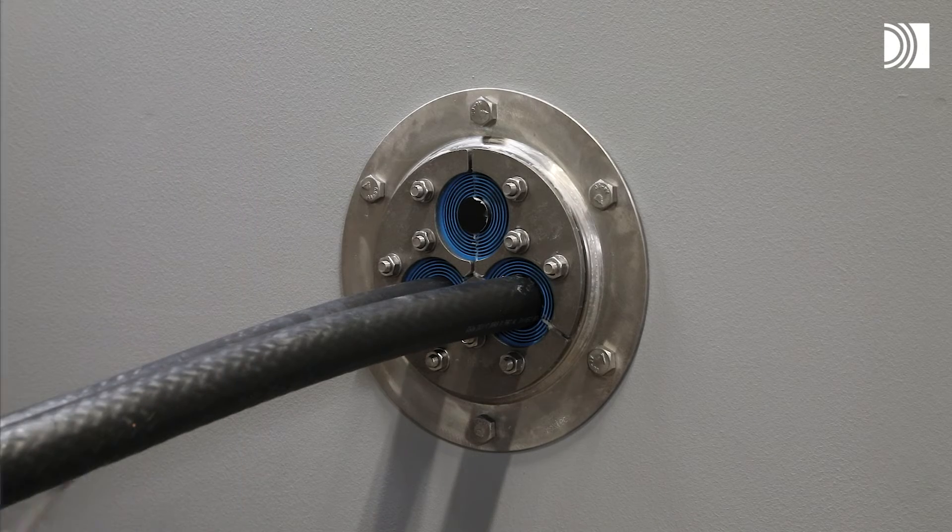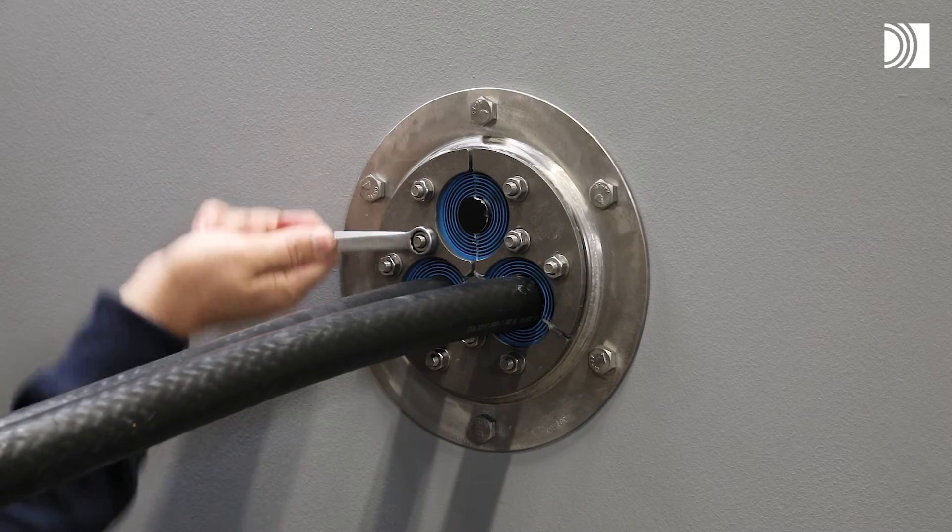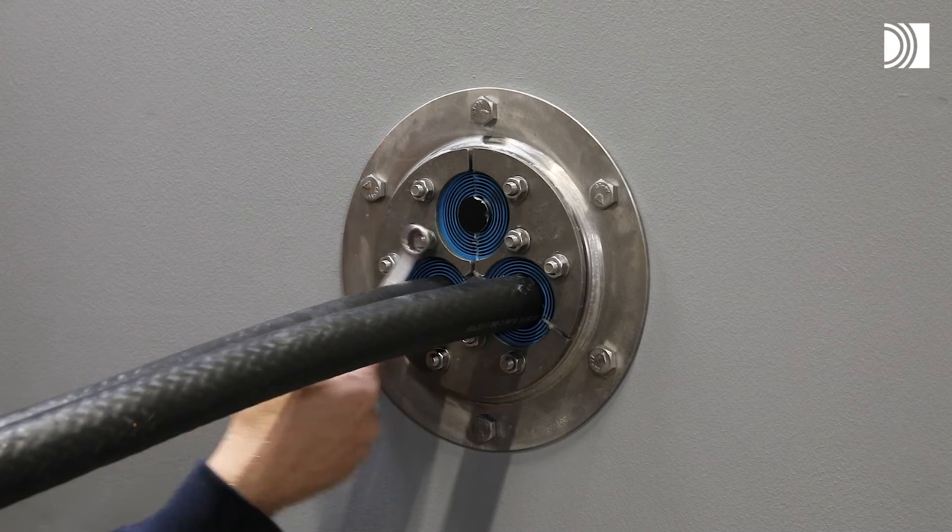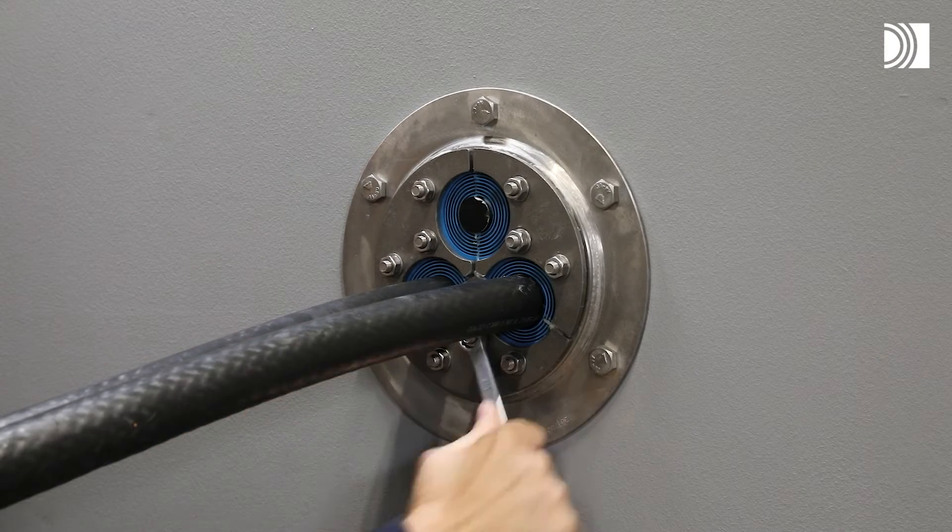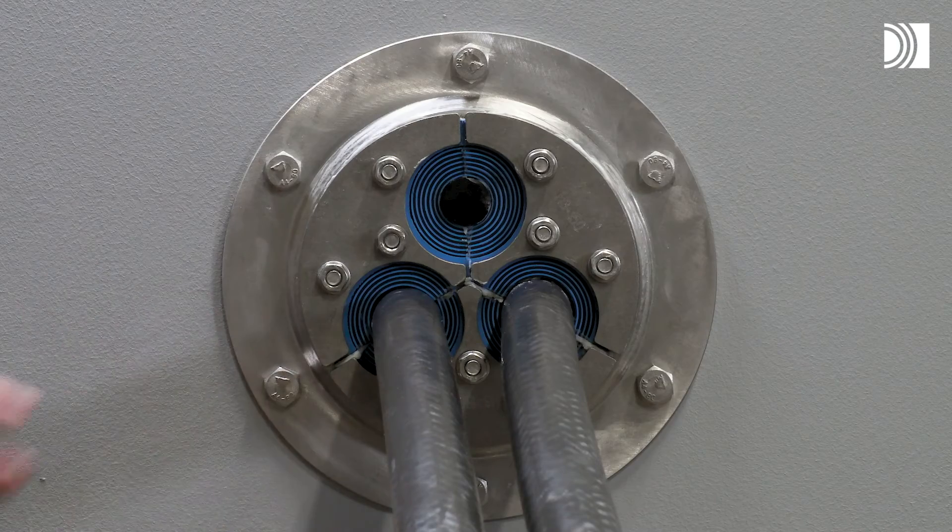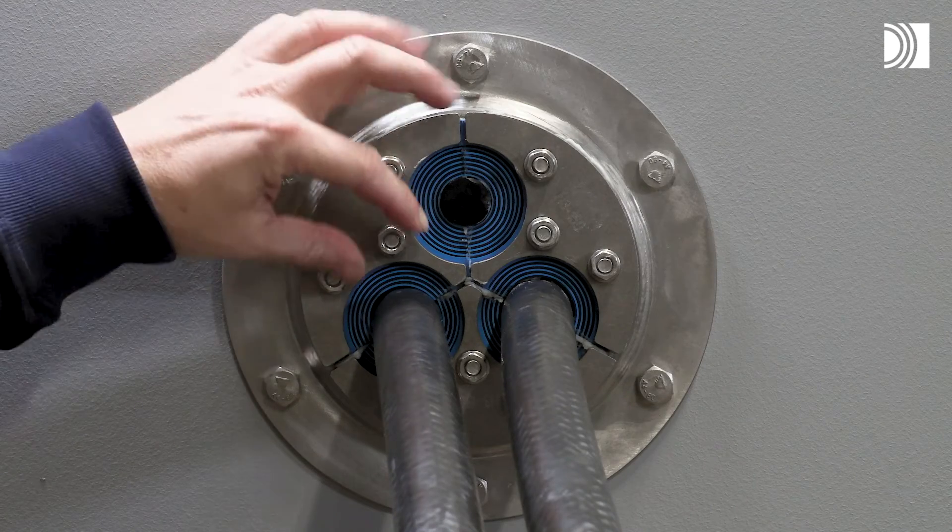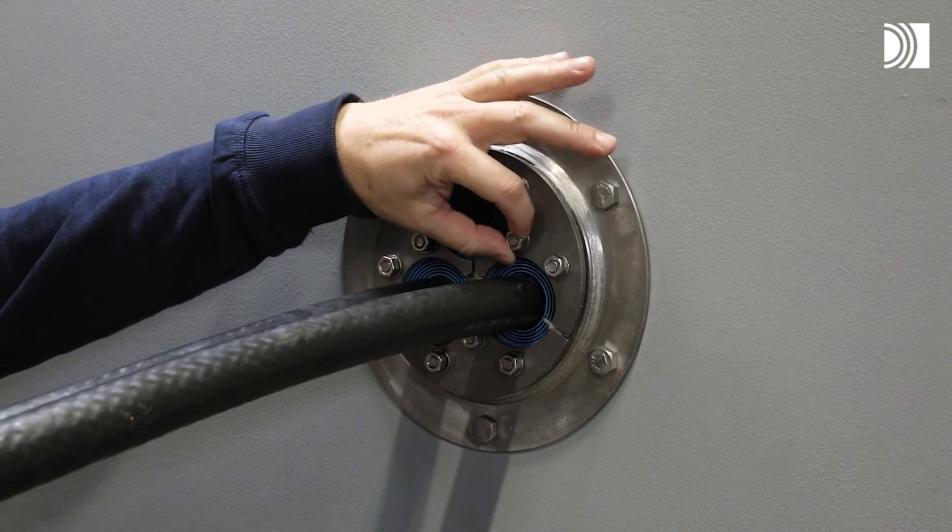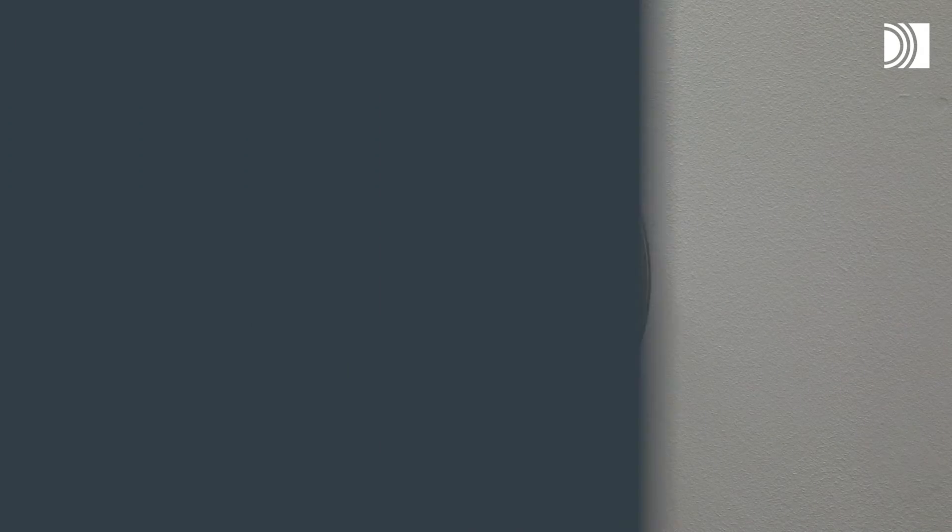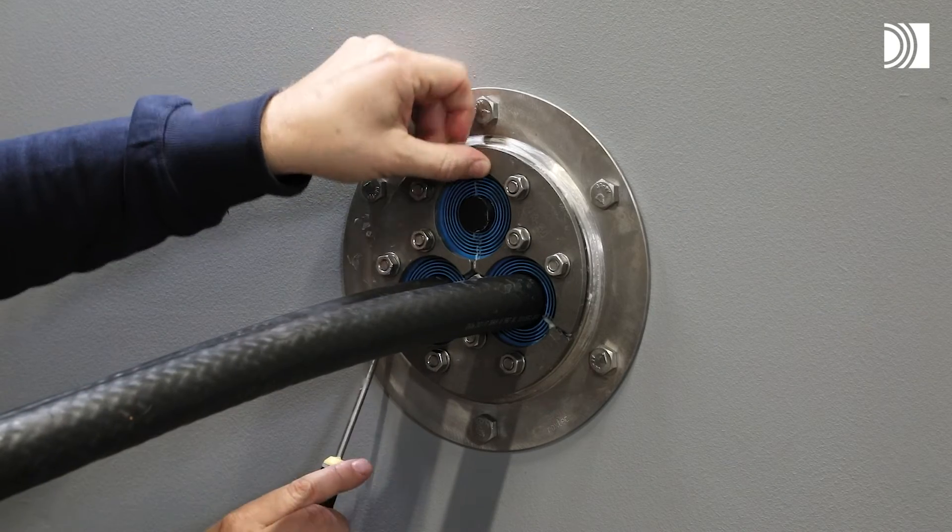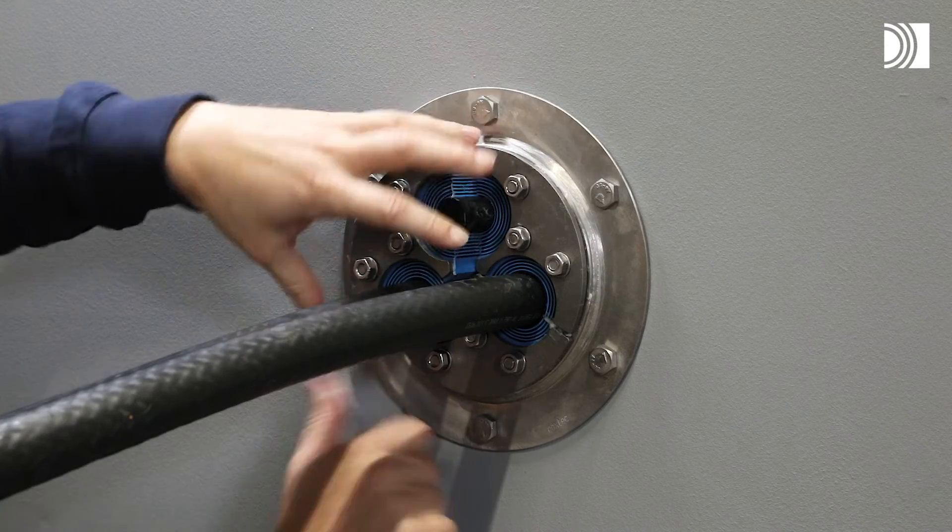Disassembly and reinstallation. Untighten the nuts crosswise in small steps. Make sure the nuts are completely loose. Remove the seal parts needed.